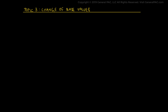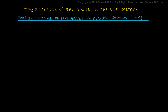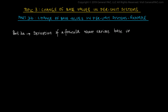Topic 3: Change of Base Values in Per Unit Systems, Part 3b. In the previous part, Part 3a, we derived a formula that was used in the case where the base values are changed. In this video, Part 3b, we will explain how the formula is employed using a simple example.